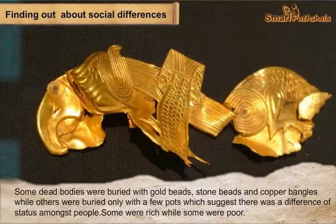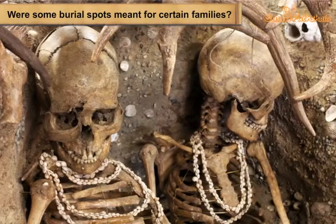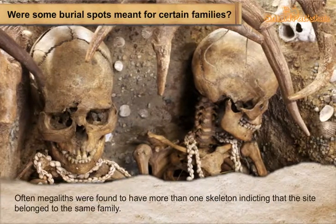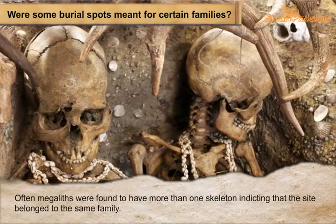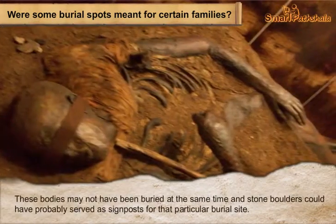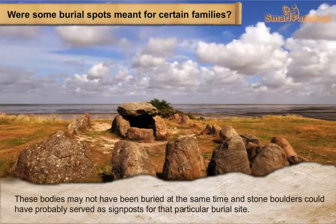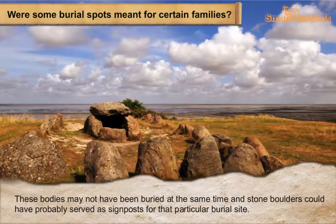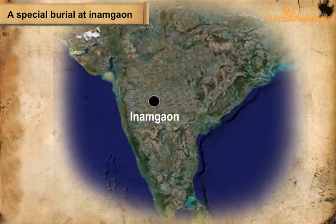Some were rich, while some were poor. Often Megaliths were found to have more than one skeleton, indicating that the site belonged to the same family. These bodies may not have been buried at the same time, and stone boulders could have probably served as signposts for that particular burial site.